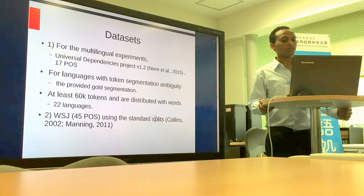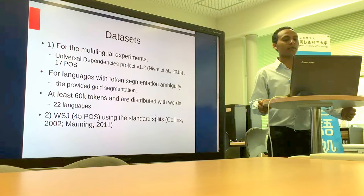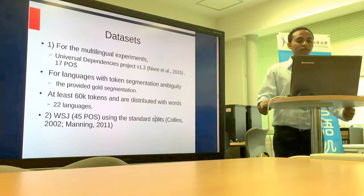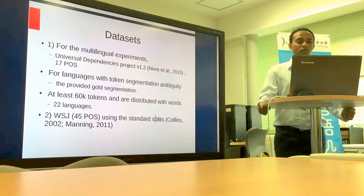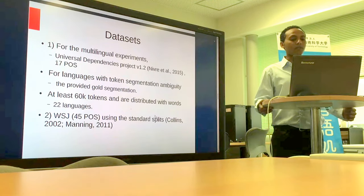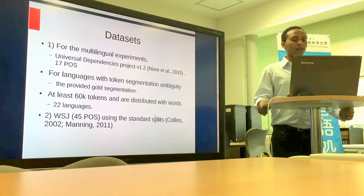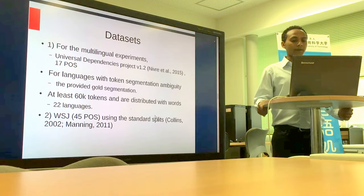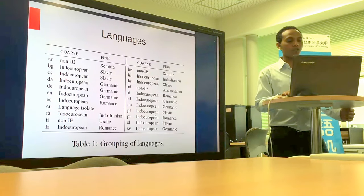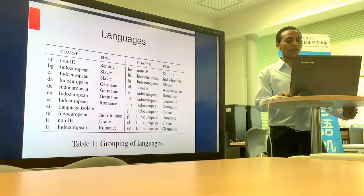They used two datasets. One is from the Universal Dependencies Project version 1.2, containing 17 part-of-speech tags. The other is from the Wall Street Journal, with 45 part-of-speech tags. For languages with token segmentation ambiguity, they provided true segmentation. They selected 22 languages where more than 60,000 tokens could be found, covering Semitic, Slavic, Germanic, Romance, Indo-Iranian, Uralic, and other language families.